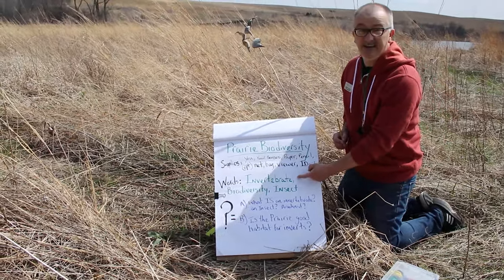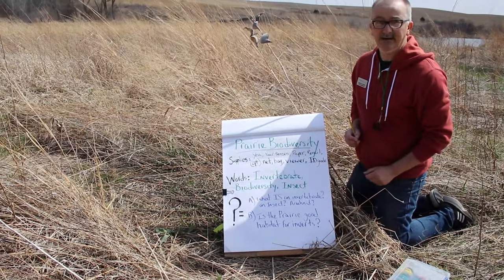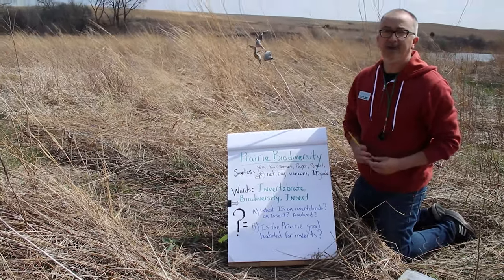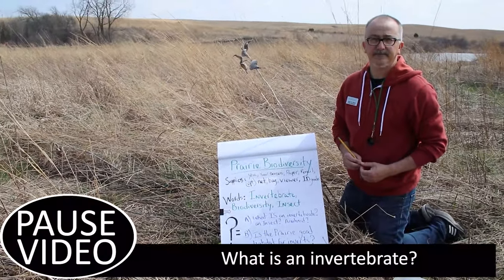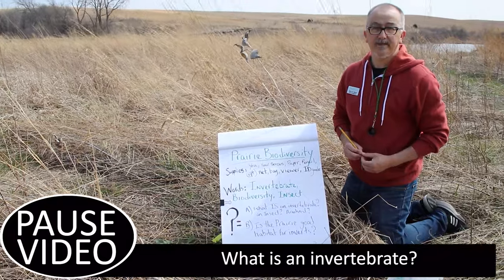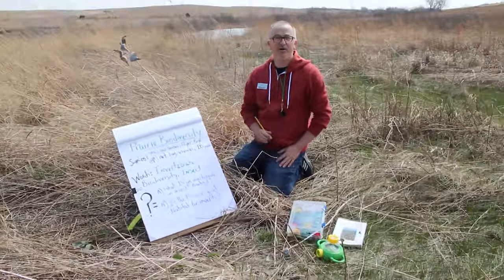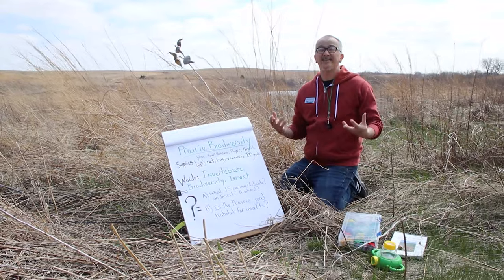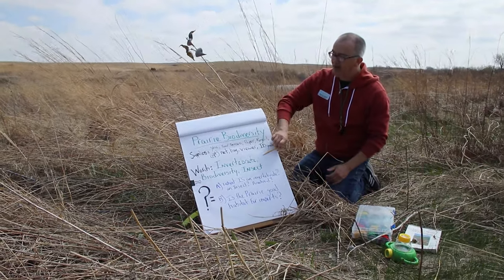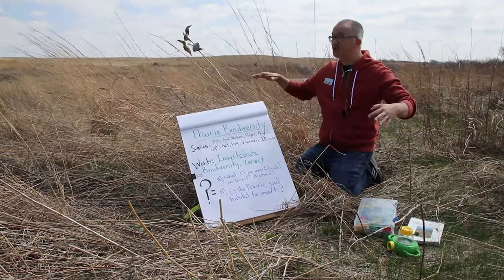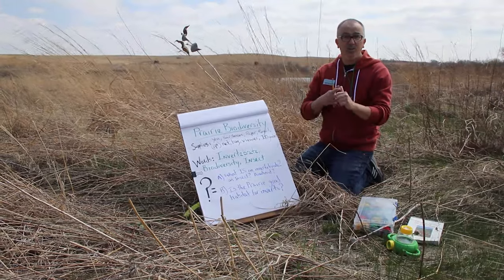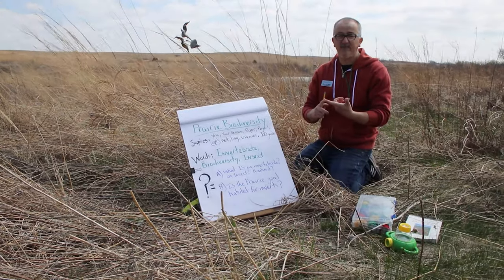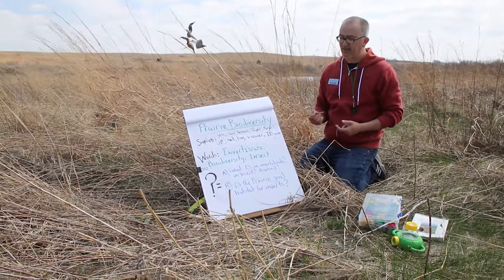Our vocab words are invertebrate, biodiversity, and insect. Maybe look invertebrate up right now and see what that is. So let's talk about invertebrate — that's all kinds of animals without a spine, no backbone. There's lots of them, things like spiders and ants. Those love to live on the prairie because there's so many plants. So when we're doing our biodiversity activity, we're going to look at how many plants we can find and how many types of bugs or other invertebrates might live on or in or under those plants here on the prairie.